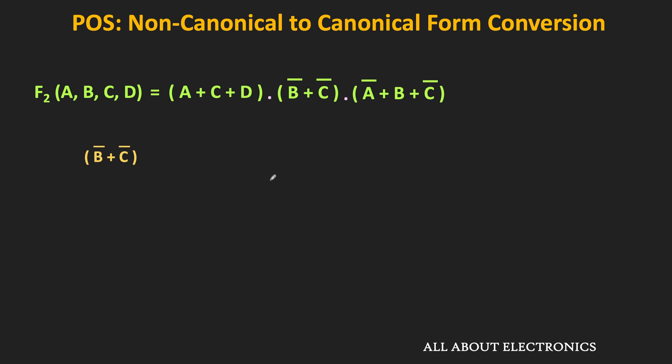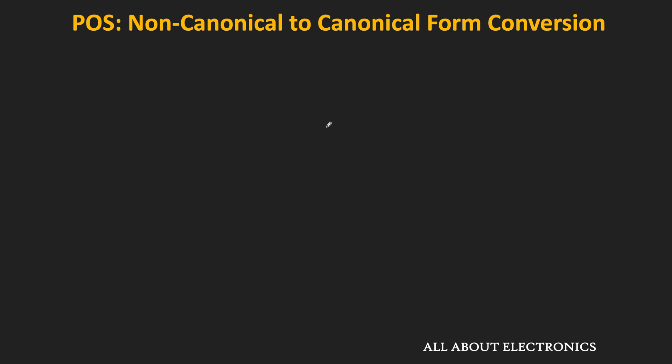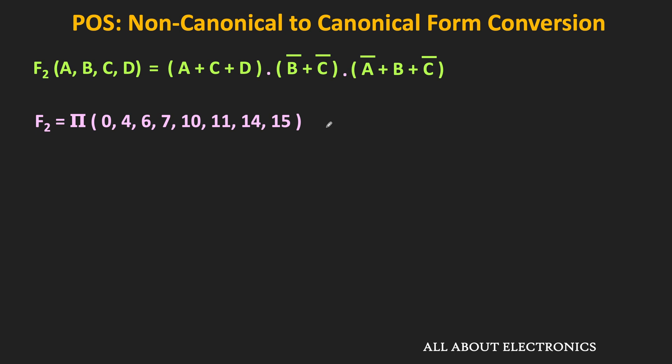For the term (B̄ + C̄), two variables A and D are missing, so we write (X + B̄ + C̄ + X). Since B̄ and C̄ are complemented their value is 1. With two unknown variables there are four possibilities, giving four maxterms. Overall we have a total of eight maxterms. The output function is the product of all these maxterms, and the expression is now in canonical form. The equivalent SOP form contains the minterm numbers not present in the POS form, between 0 and 15.